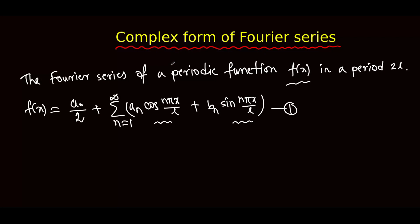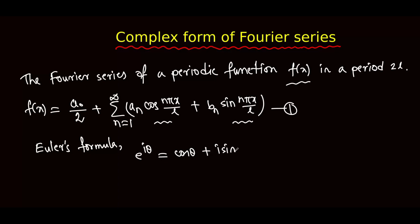Let us know the Euler's formula. This is Euler's formula: e to the power of i theta is equal to cos theta plus i sin theta. And e to the power of minus i theta is equal to cos theta minus i sin theta.